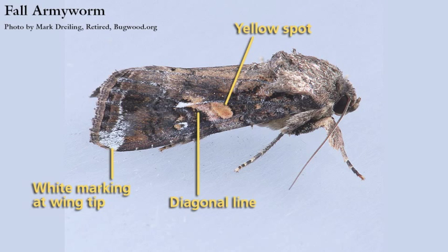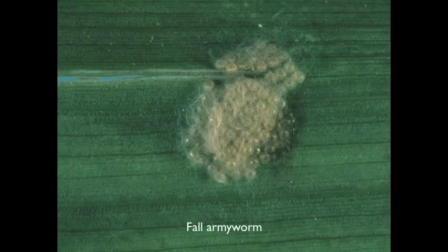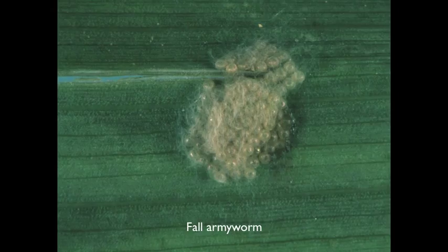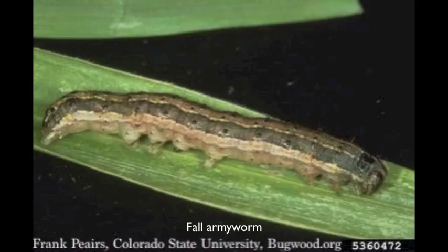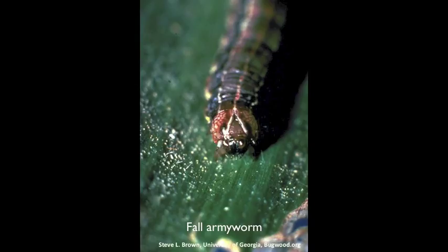Fall armyworm adults have a white mark at the tip of the wing, a white diagonal line across the center of the wing, and a yellow spot located near this line. Eggs can be found anywhere on the plant, laid in clusters of 100 to 200, and are covered with scales and hairs from the female moth. Eggs will hatch in about 5 days depending on temperatures. Larvae are tan, green, or nearly black, and the distinguishing feature of the larvae is the inverted white Y on their head.